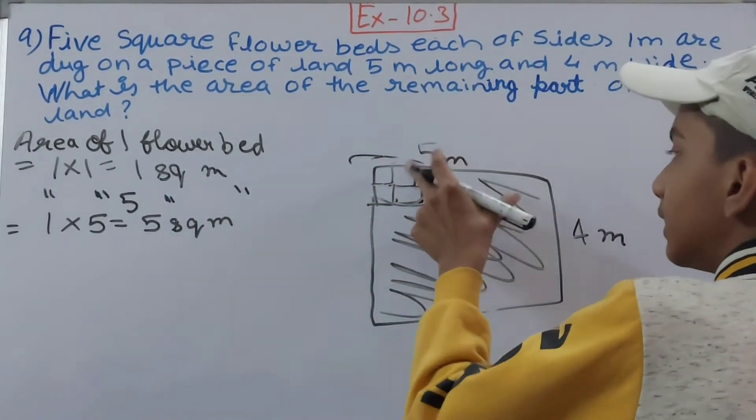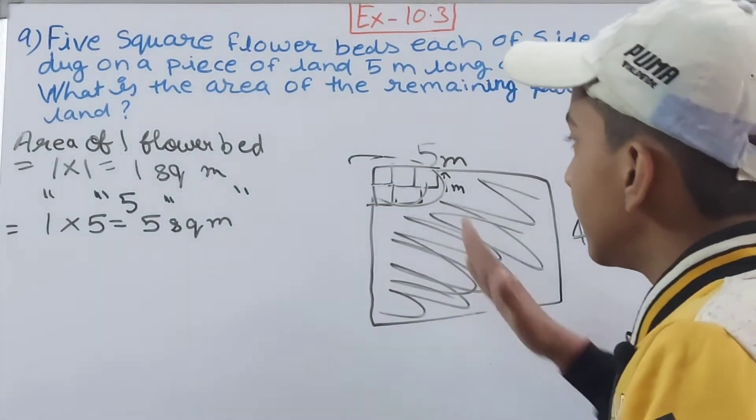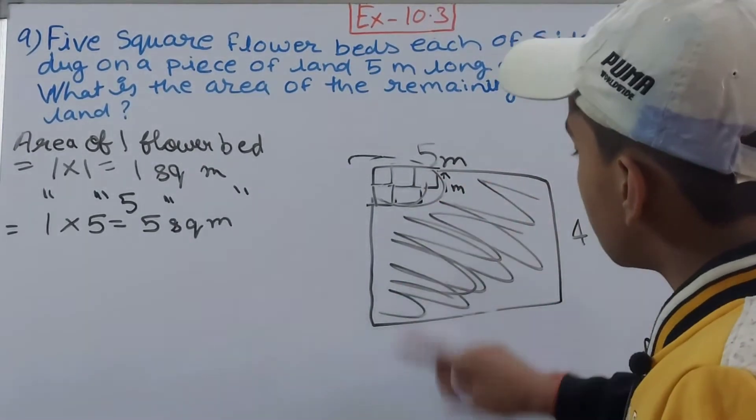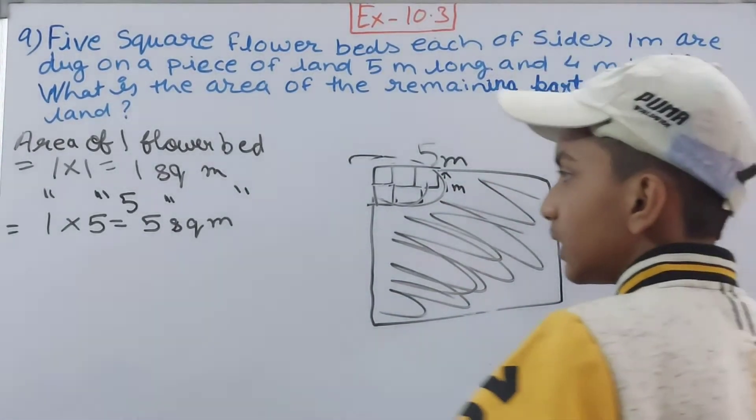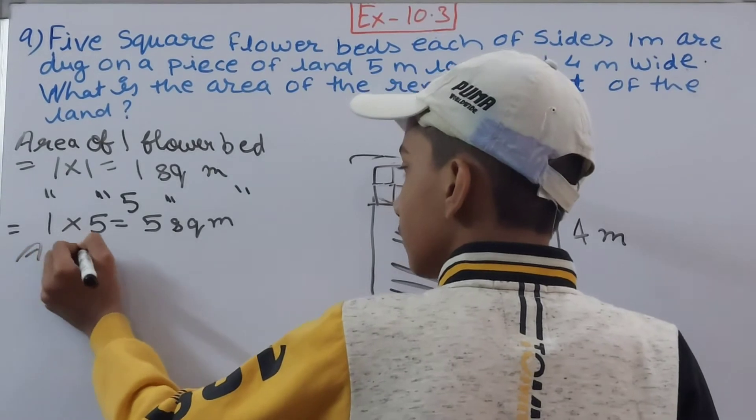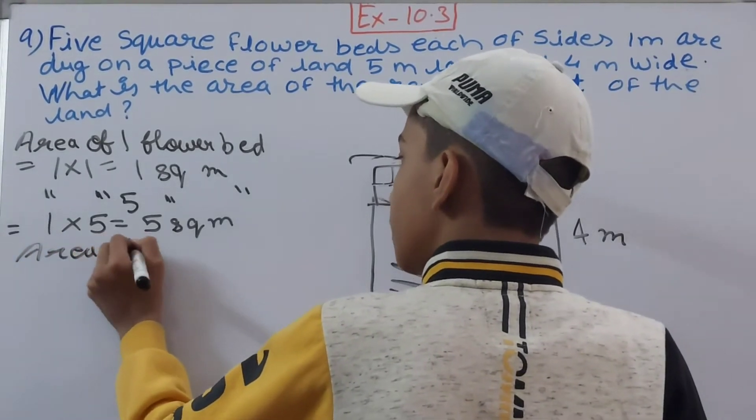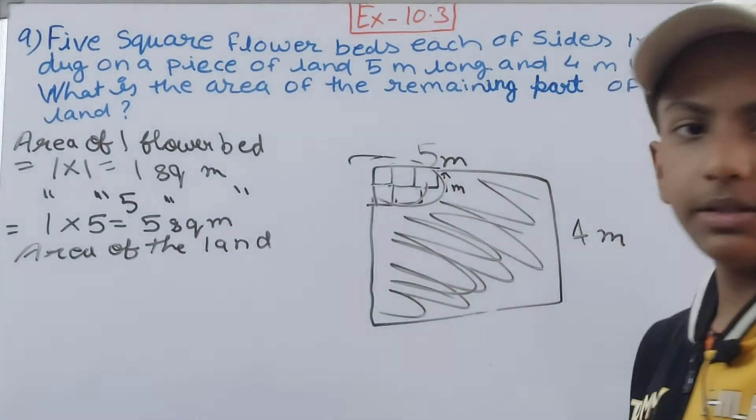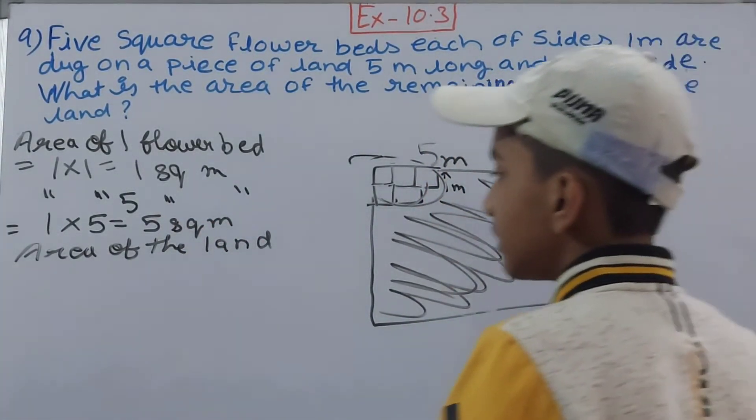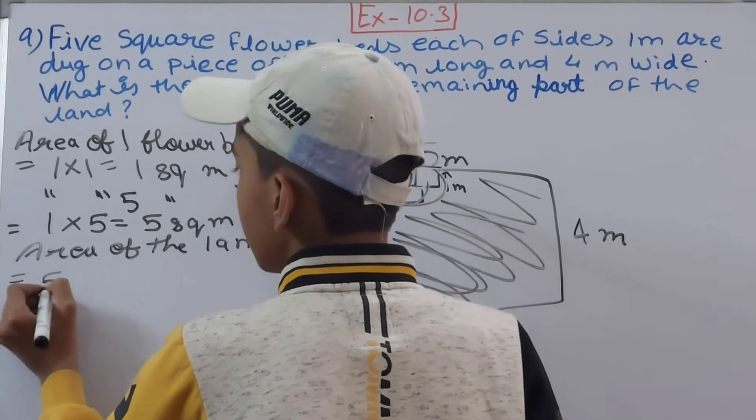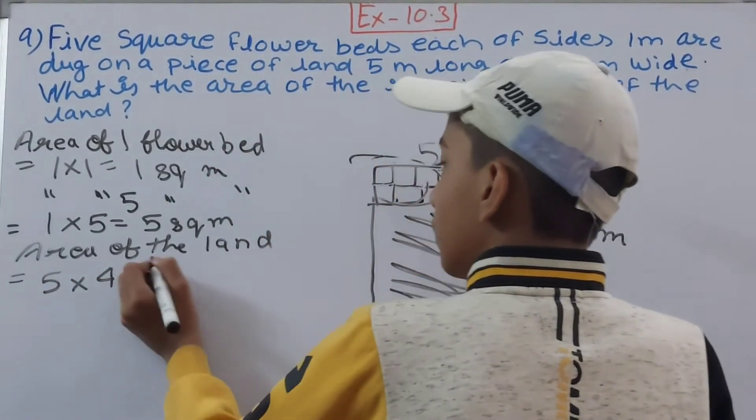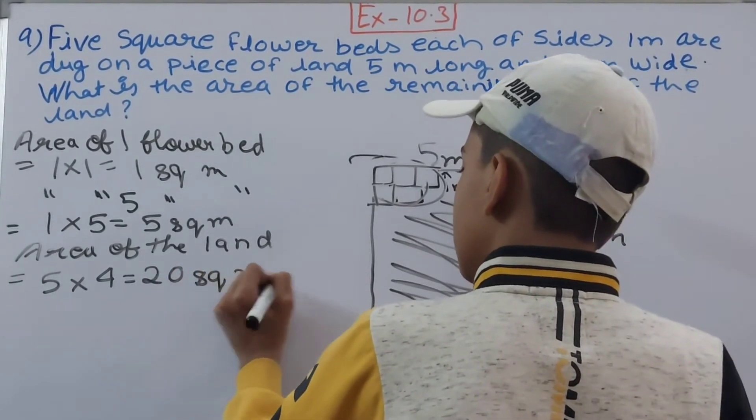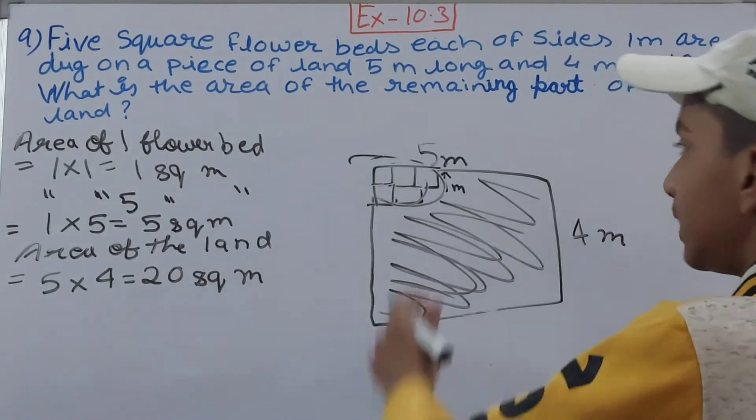Now you have to find the total area, then only you can subtract 5 square meters from that to get the answer. Area of the land: It is a rectangle, so you'll do length into breadth. Length is 5 meters, so 5 into 4, that is 20 square meters.